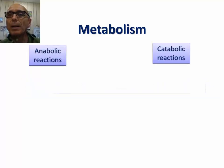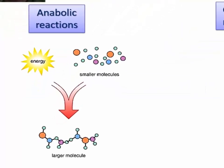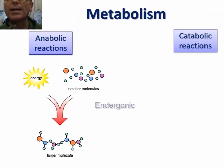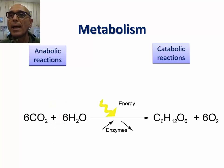In anabolic reactions, complex molecules are built from simple ones. Anabolic reactions require input of energy and therefore are endergonic by nature. An example of anabolic reactions is the synthesis of glucose from water and carbon dioxide.